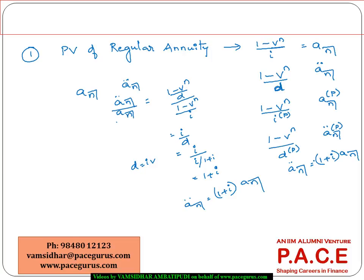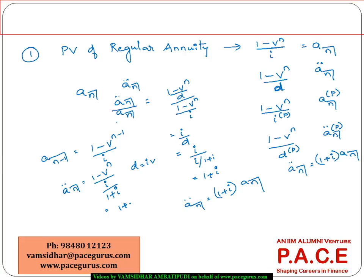For a_{n-1}, the formula would be (1 - v^(n-1)) / i. Looking at ä_n = (1 - v^n) / d, where d = i/(1+i), we take (1+i) to the numerator: ä_n = (1+i)(1 - v^n) / i. Expanding (1+i) × 1 gives us the beginning of a useful relationship between annuity due and the standard annuity formula.